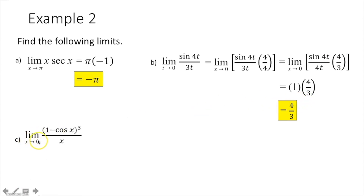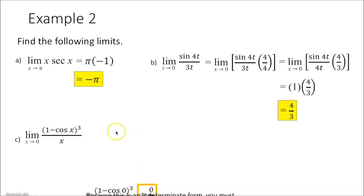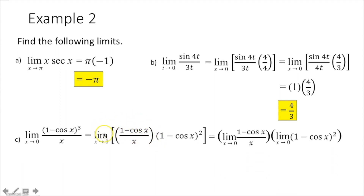The limit as x approaches 0 of 1 minus cosine of x cubed over x — plugging in 0 gives an indeterminate form, so we go back and simplify. Rewrite this as 1 minus cosine of x over x, times 1 minus cosine of x squared. The limit as x approaches 0 of 1 minus cosine of x over x equals 0 (special limit). The limit as x approaches 0 of 1 minus cosine of x squared — plug in 0: cosine of 0 is 1, so 1 minus 1 squared is 0. So 0 times 0 gives you 0.